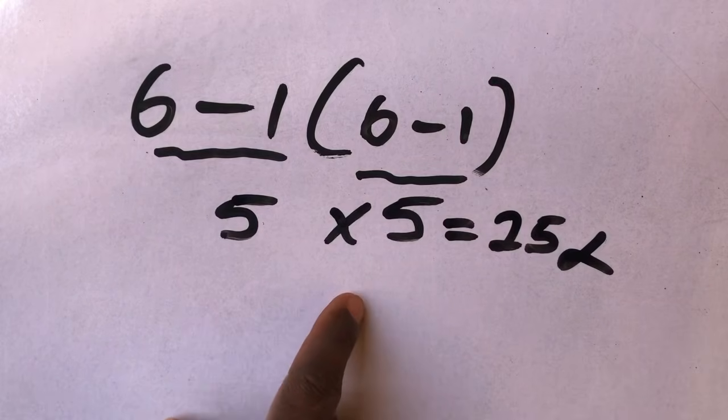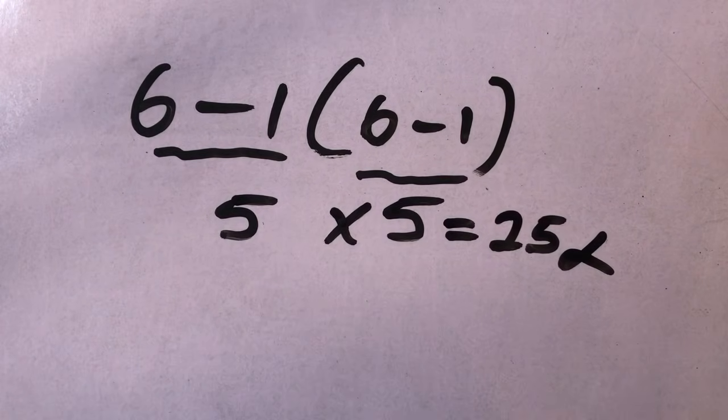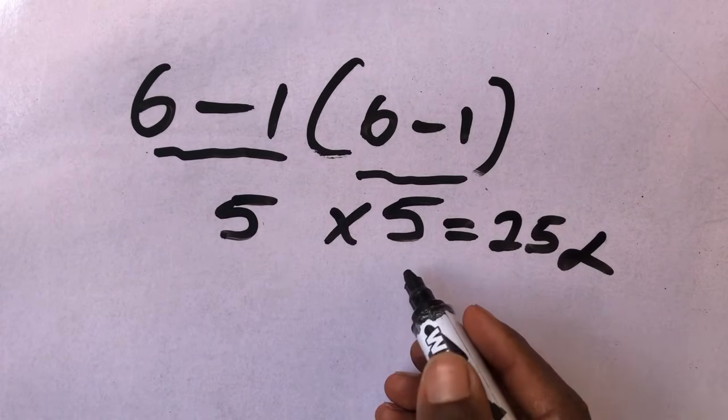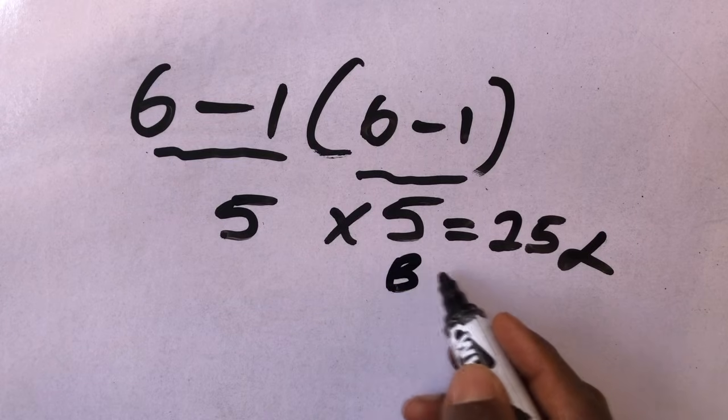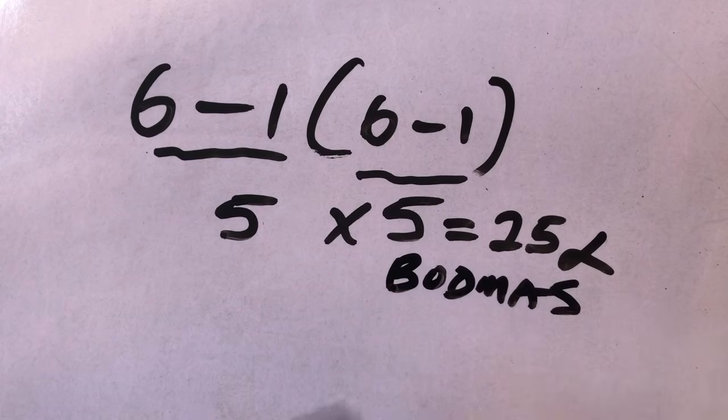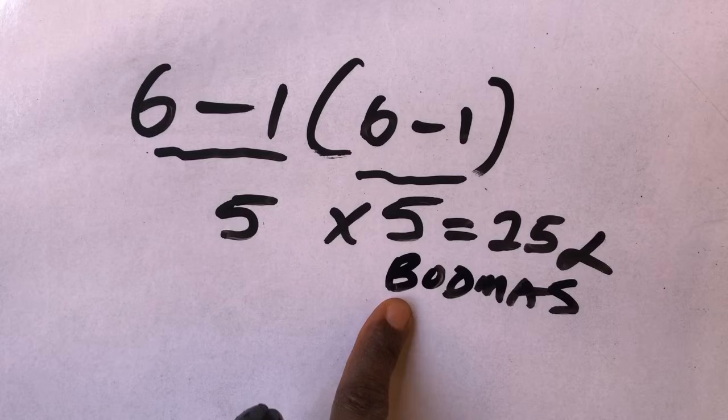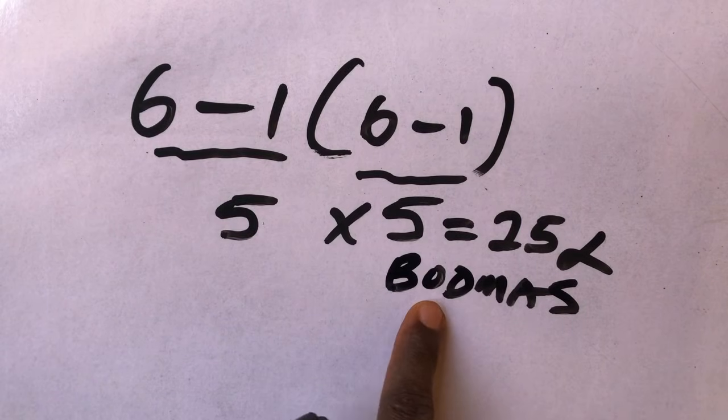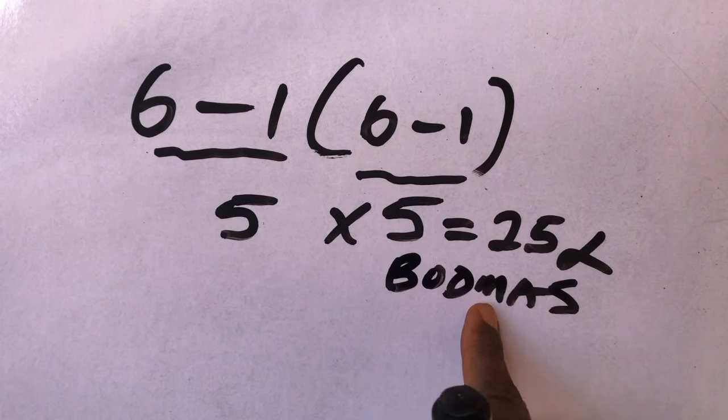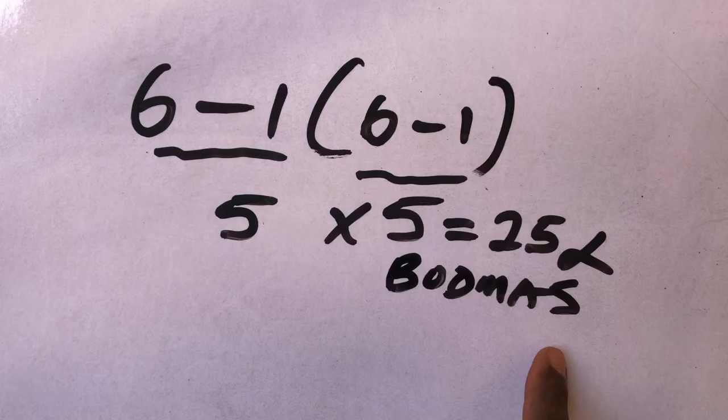The reason why this answer is not correct is because according to BODMAS rule, according to order of operation, this B stands for bracket, O stands for of, division, multiplication, addition, then subtraction.